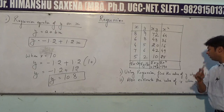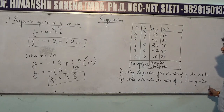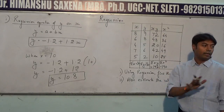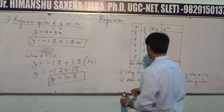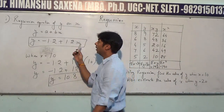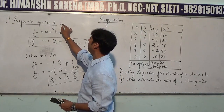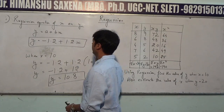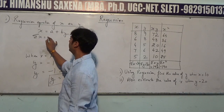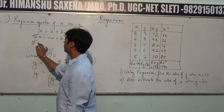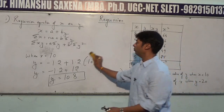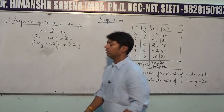Similarly, we have to find the value of x when y is equal to 20. For this second part, we need one more set of formulas — the regression equation of x on y. The equation is: x = a + dy, with normal equations: summation x = na + e·summation y, and summation xy = a·summation y + e·summation y². Please take down these formulae.